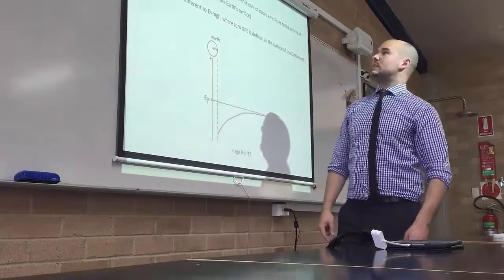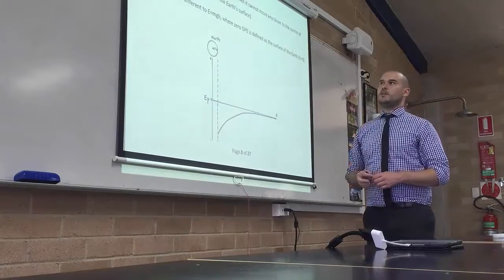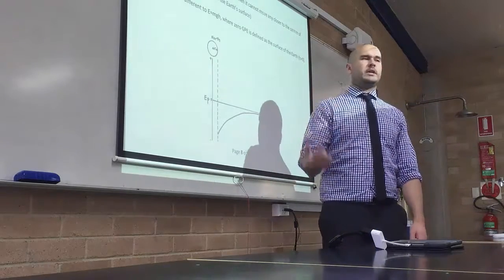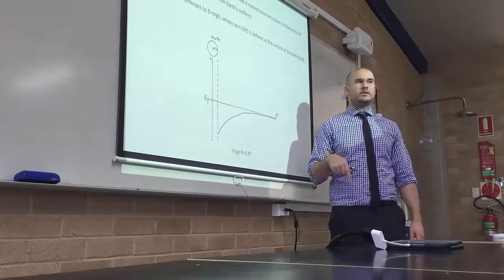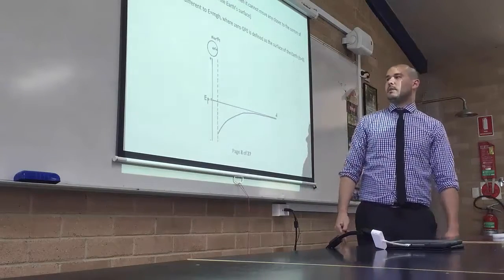Object has its lowest or most negative GPE when it cannot move any closer to the centre of mass of the massive object. So that is for us, we would say, the surface of the Earth is when GPE would be the lowest. Again, infinity is when GPE would be the highest.